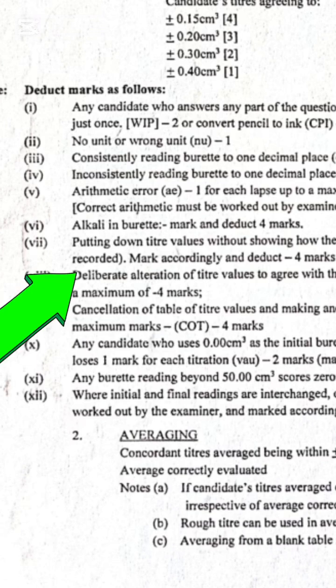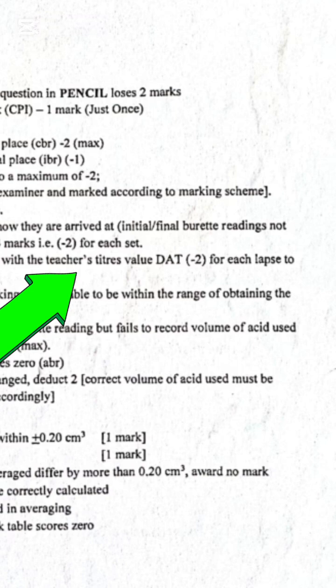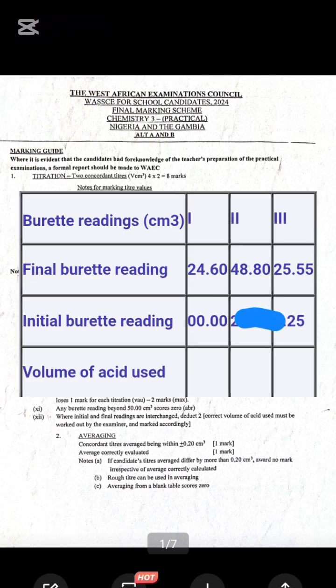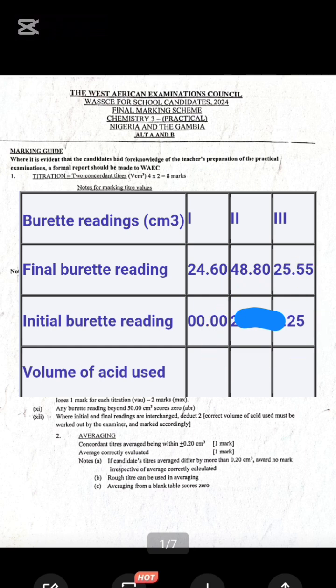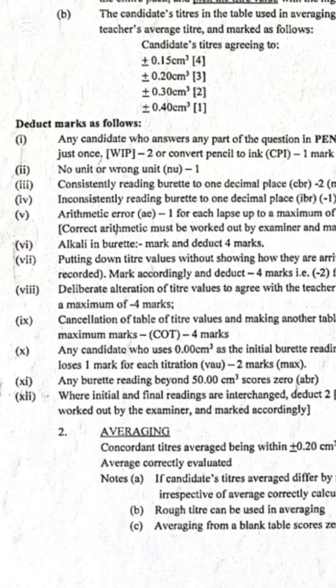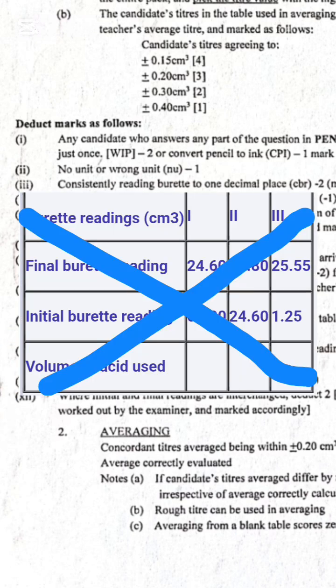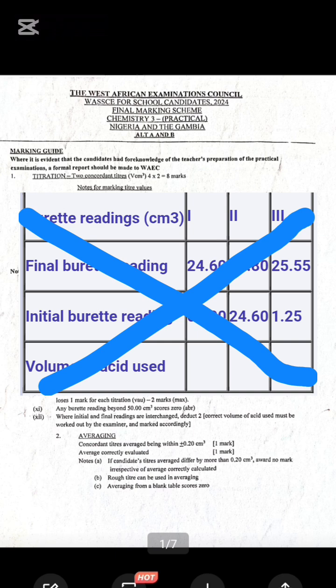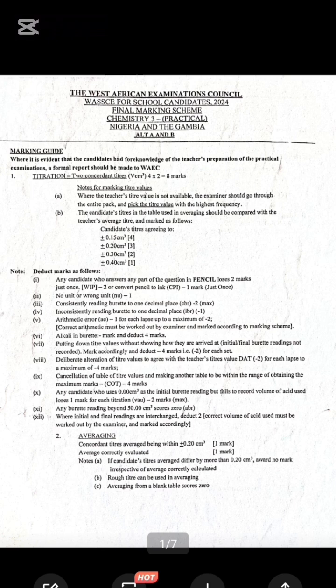Number eight: deliberate alteration of titre values to agree with the teacher's titre values — we call it DAT. That means you wrote a titre value, then shaded it or changed it for any reason. The maximum deduction is minus four. Number nine: cancellation of the table of titre values and making another table to be within range of obtaining maximum marks — we call it COT — minus four. You must not cancel your table. That's also why some teachers tell you to use pencil to draw the table, which makes you fall victim of error number one if you forget to erase the pencil.